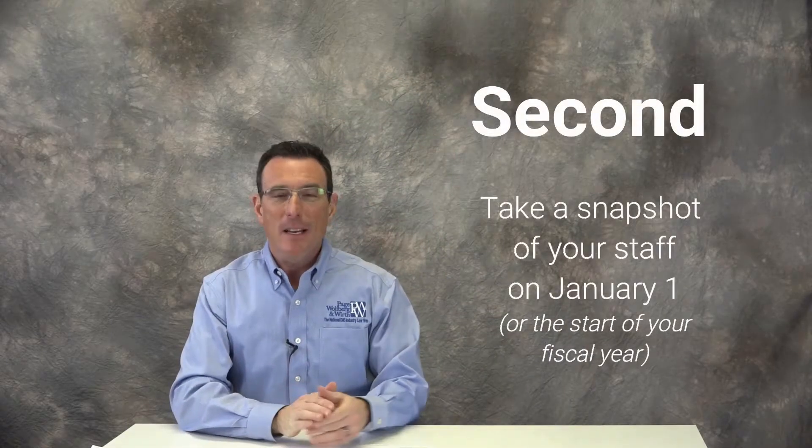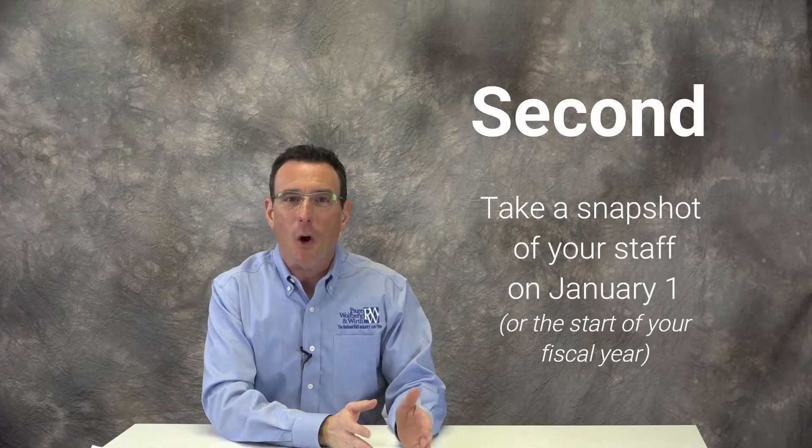The second thing you need to do is on January 1st or as soon as possible thereafter, take a snapshot of your staff. Document which personnel are working in which positions as of January 1. This may sound a little counterintuitive, but whatever position a person holds on January 1 in your organization, that's the category in which you're going to report them for the entire year.